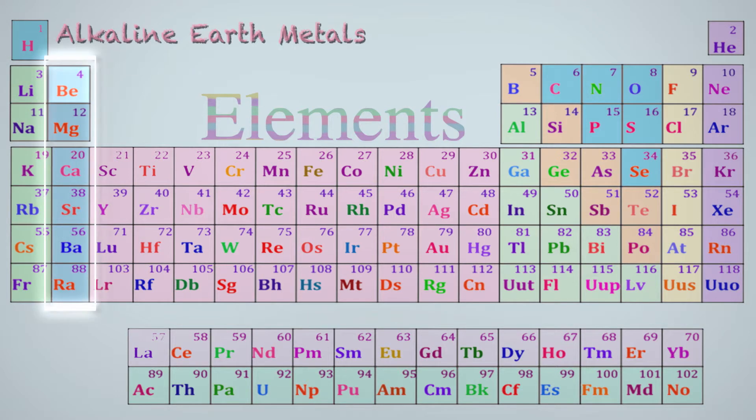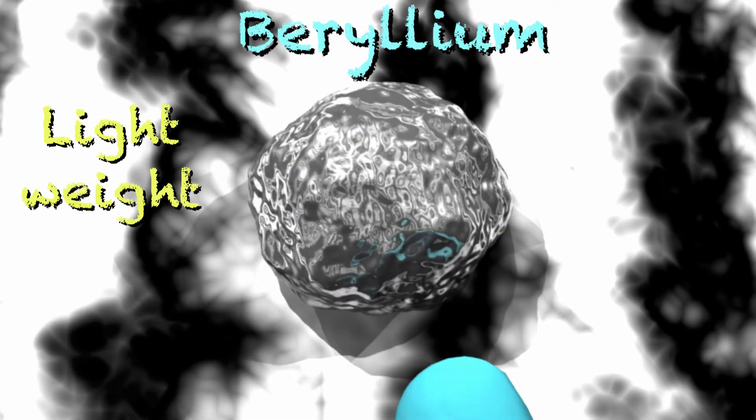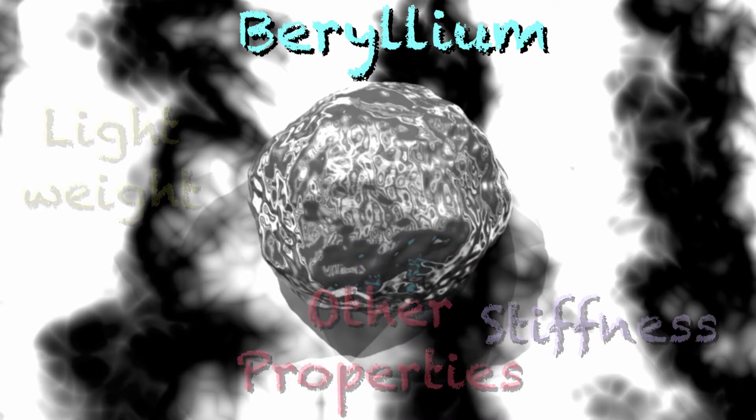Beryllium is the first of alkaline earth metals together with magnesium and calcium. Strong and stable, it is valued for its light weight, stiffness, and other unique properties.